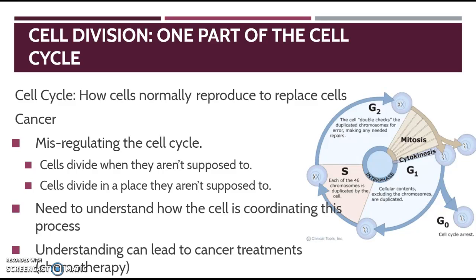Now cell division is just one part of the cell cycle. The cell goes through all these different stages in its life cycle, and most of its life it spends in interphase, composed of G1, S, and G2. Go back and watch the mitosis and cell cycle videos if you need to get caught up. Now mitosis comes after interphase, and what happens in cancer is that we have some misregulation of this cell cycle.